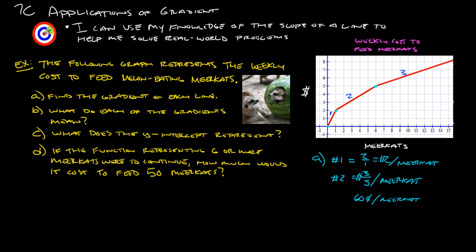Okay, so every meerkat you add from one all the way up to six, you're going to have to spend 60 more cents per meerkat. Okay, and then the third one is line number three. Here's a point, and let's see, let's make this easy on ourselves. Here's another nice point right there. So the slope of that is up one over three. One over three. So that's a third of a dollar per meerkat. So let's do 33 cents per meerkat.